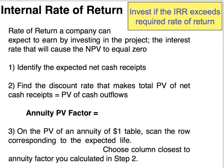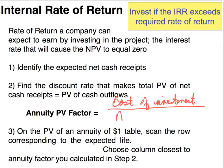We're going to identify the expected net cash receipts from the investment, then find the discount rate that makes the total present value of the net cash receipts equal the present value of cash outflows. In other words, we're looking for the annuity present value factor. To do that, we take the cost of the investment and divide it by the annual net cash inflows. Once we find this annuity present value factor, we go into our time value of money tables, look for that factor on the present value of an annuity table, scan the row corresponding to the expected life, and choose the column closest to the calculated factor. We'll see how that works with an example.